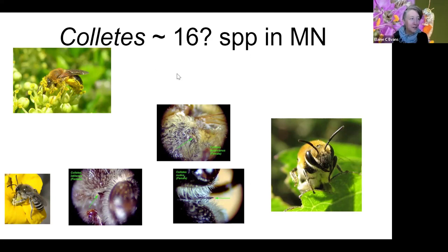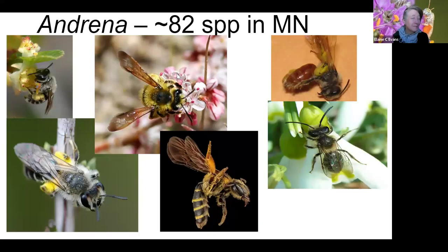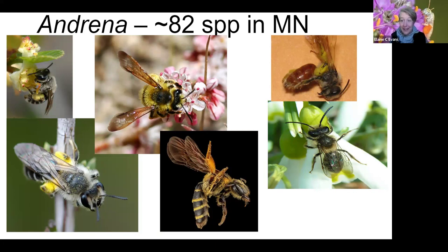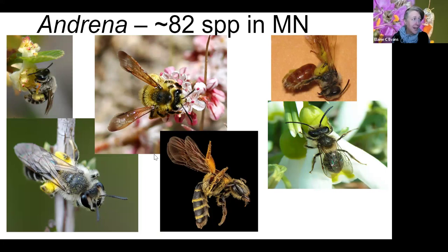You can help find them by taking photos of bees. Another big group are Andrena — mining bees — with over 80 species in Minnesota. Many of these are specialists that visit certain types of flowers. They mostly carry their pollen in the upper part of the hind legs, and they tend to have flatter abdomens — one feature I look for when IDing them out in the field.